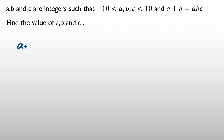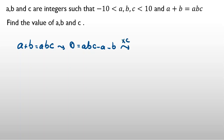We have A plus B equal to A·B·C. I want to factorize — take all things to one side: zero equals A·B·C minus A minus B. And multiply it by C for factorizing.